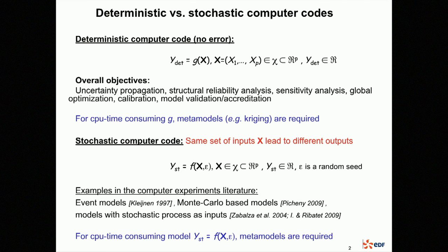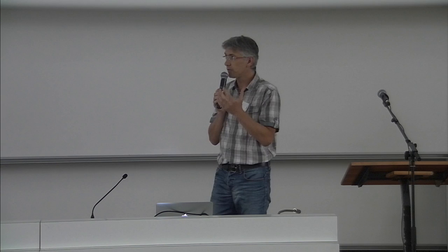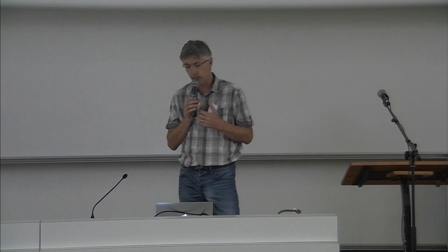In the computer experiments literature, we can find this kind of problem when dealing with event-driven models. Jack Kleijnen has shown many examples in this framework. In my company, for example, we have a stochastic model when dealing with asset management models where we model the lifetime of a component by putting random events on this lifetime. In this talk I will focus on Monte Carlo-based models, and we also have these situations when the model involves a stochastic process, so epsilon induces stochastic process realizations.